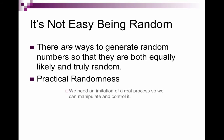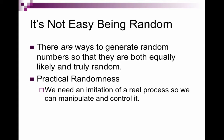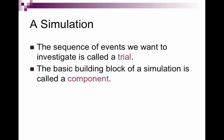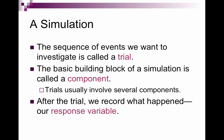The practical randomness is where we imitate a real process so we can manipulate it and control it. In short, we can simulate reality. So a simulation. The sequence of events we want to investigate is called a trial. The basic building block of a simulation is called a component. Trials usually involve several components. After a trial, we record what happened, which is called our response variable.